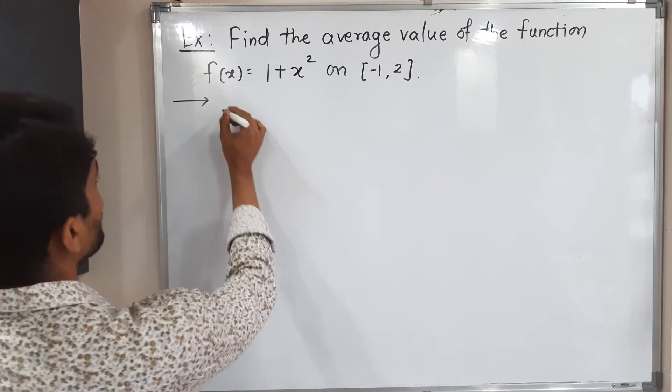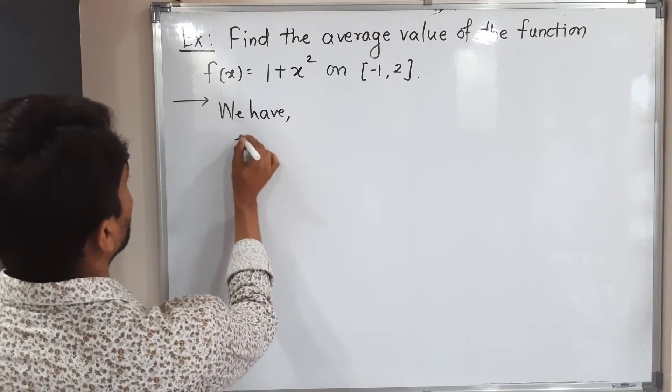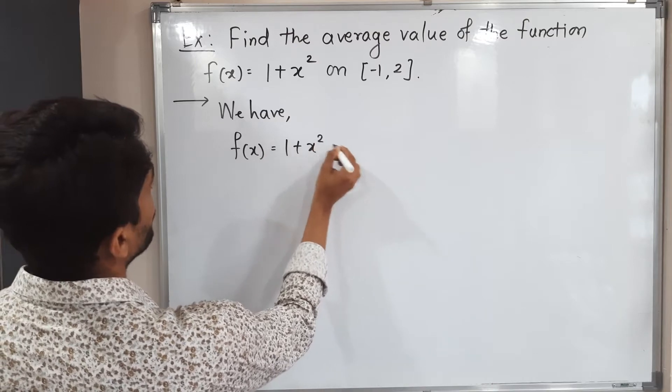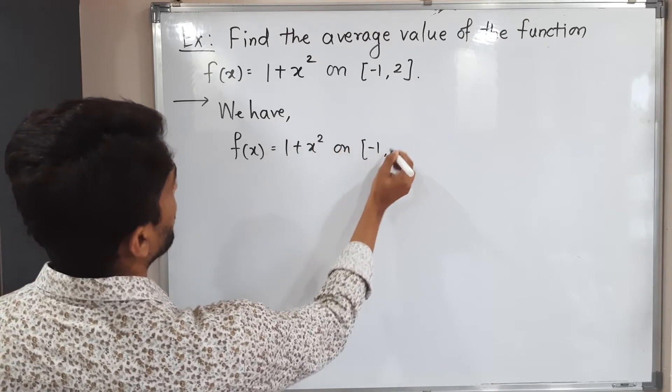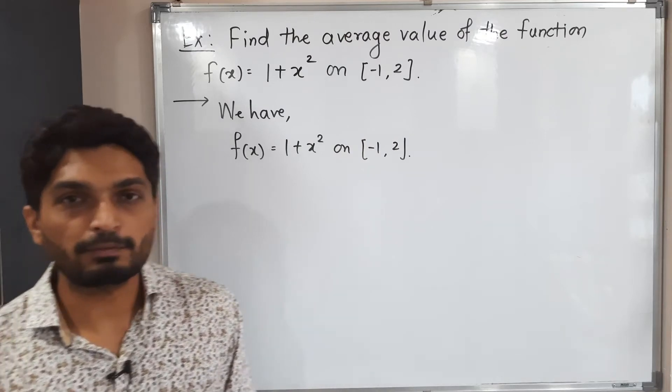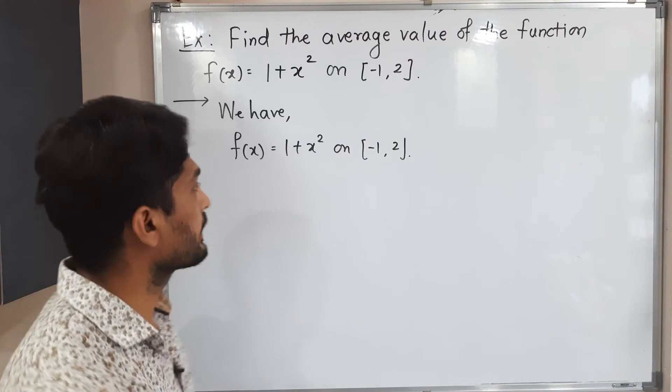Let us write the given function first. We have f(x) equal to 1 plus x square on the closed interval minus 1 comma 2. Clearly it's a polynomial function, that's why it is a continuous function. So we can apply that technique to find its average value.